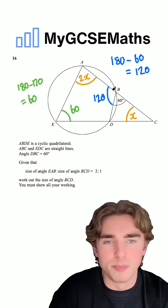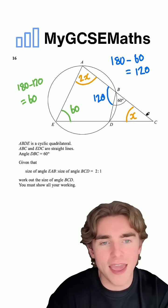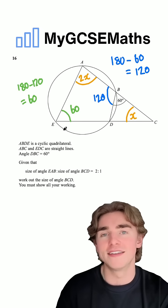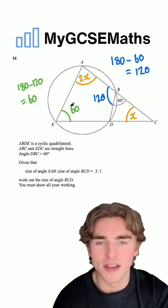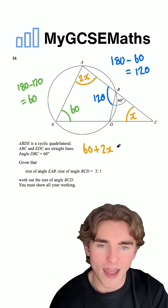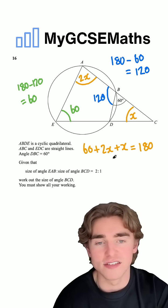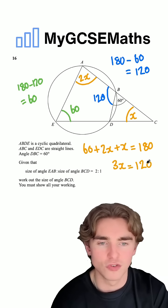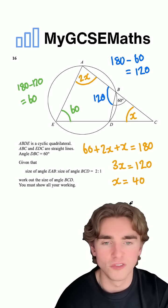Let's have a closer look. We need to work out the size of angle BCD. I've noticed that we have a larger triangle ACE, and we know that angles in a triangle add to 180. So we can set up the equation: 60 plus 2X plus X equals 180. Rearranging: 3X equals 120, so dividing by 3 gives us X equals 40.